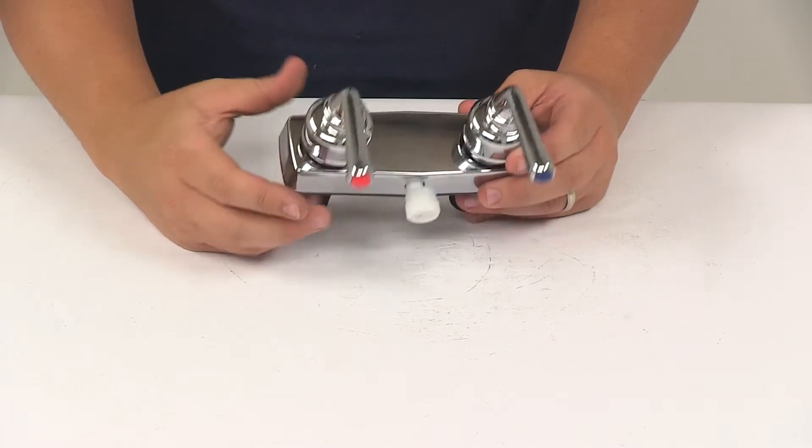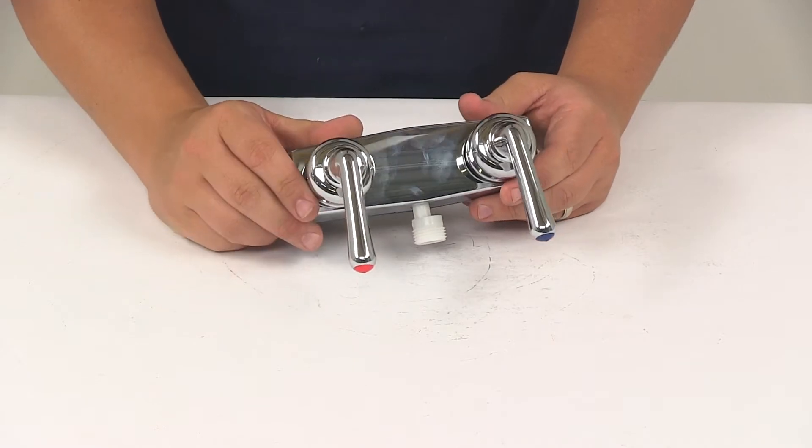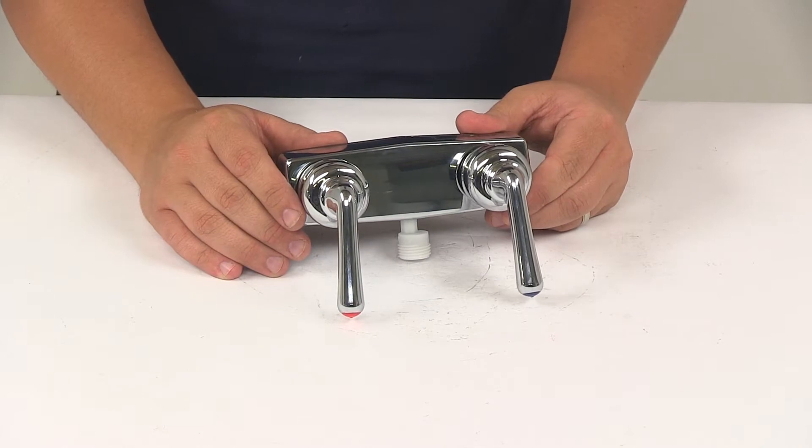It gives the unit a really nice look, and it's got the vacuum breaker for attaching a handheld shower. Now, a handheld shower is not included - that is sold separately. We offer them on our website at eTrailer.com if you're interested.